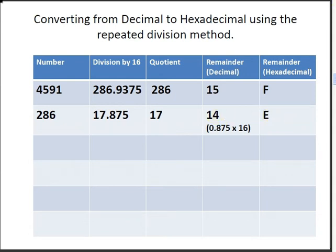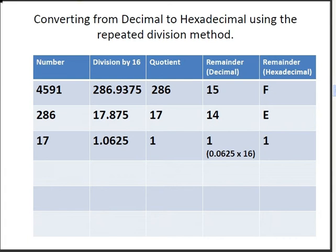Now we bring down 17. Dividing that by 16 gives 1.0625. The quotient is 1, and the remainder is 1 — that's 0.0625 times 16. The hexadecimal equivalent of 1 is simply 1.